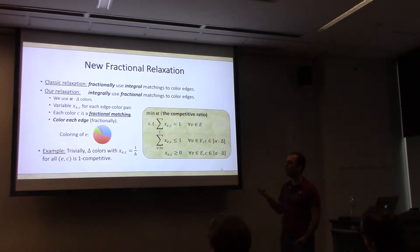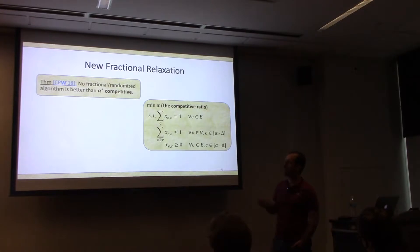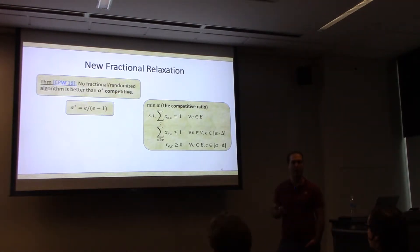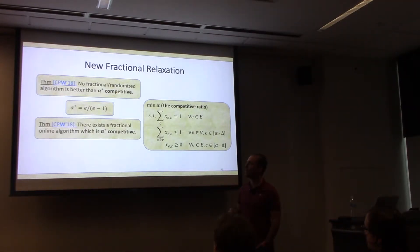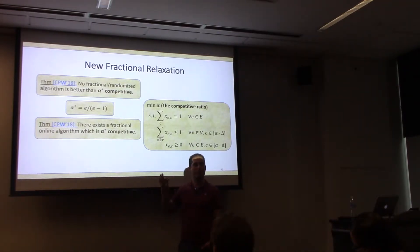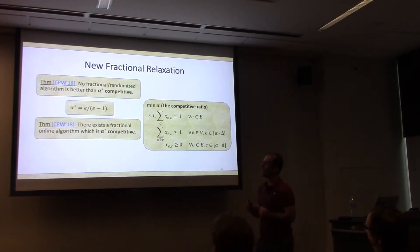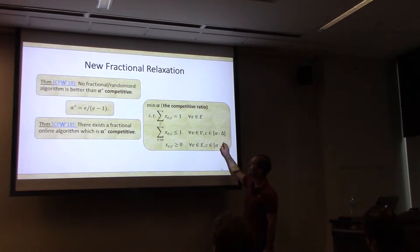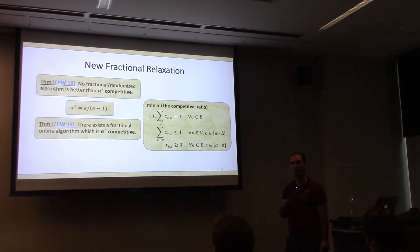Using this relaxation: first, we show no fractional — and as a corollary no randomized — algorithm is better than alpha-star competitive, where alpha-star equals e over e-minus-one. This is particularly nice because we actually show how to match this bound fractionally. There exists a fractional online algorithm that is alpha-star competitive: using alpha-star-delta fractional matchings, it covers every single edge.